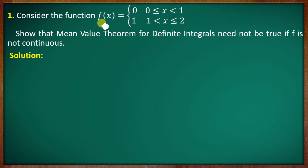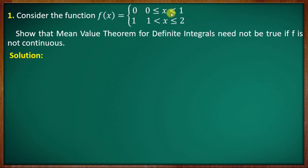Consider the function f(x) = 0 for 0 ≤ x < 1, and f(x) = 1 for 1 < x ≤ 2. This is to show that the mean value theorem for definite integrals need not be true if the function is not continuous. The function is piecewise continuous — it is continuous on [0,1) and continuous on (1,2], but not continuous at x = 1.